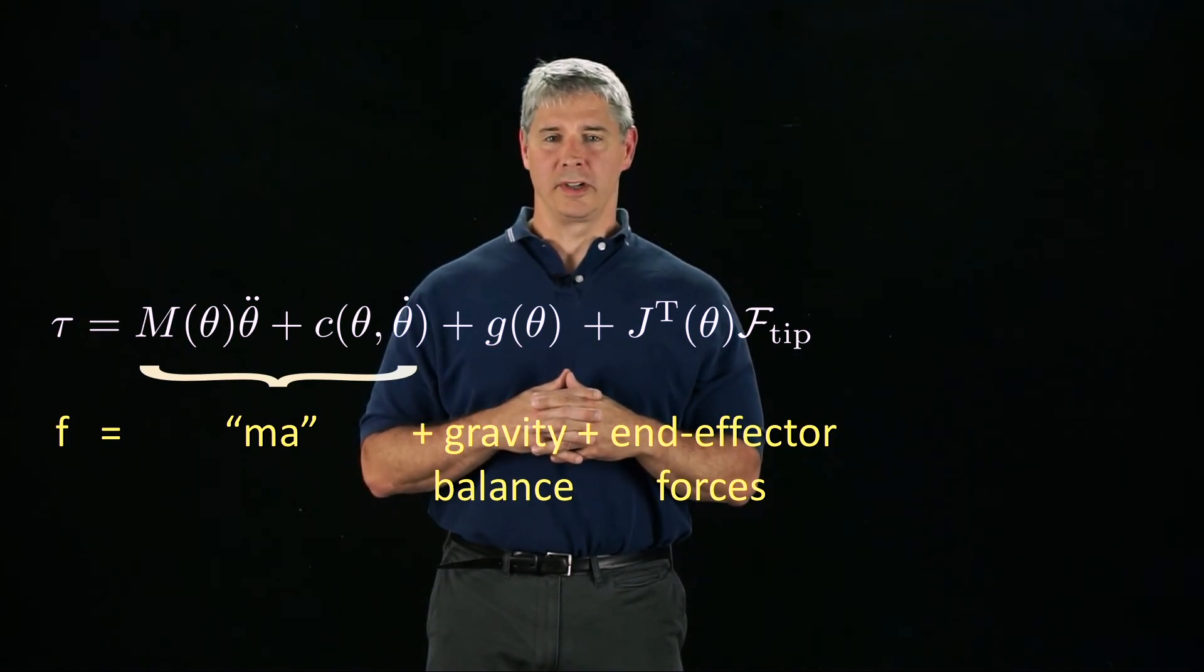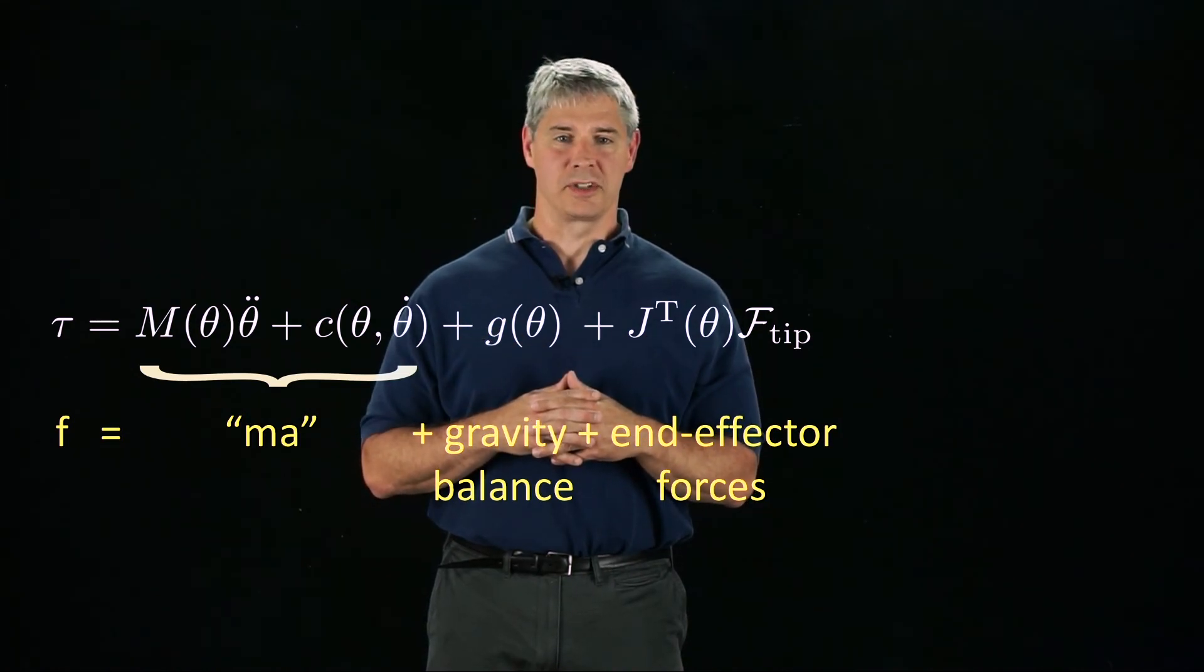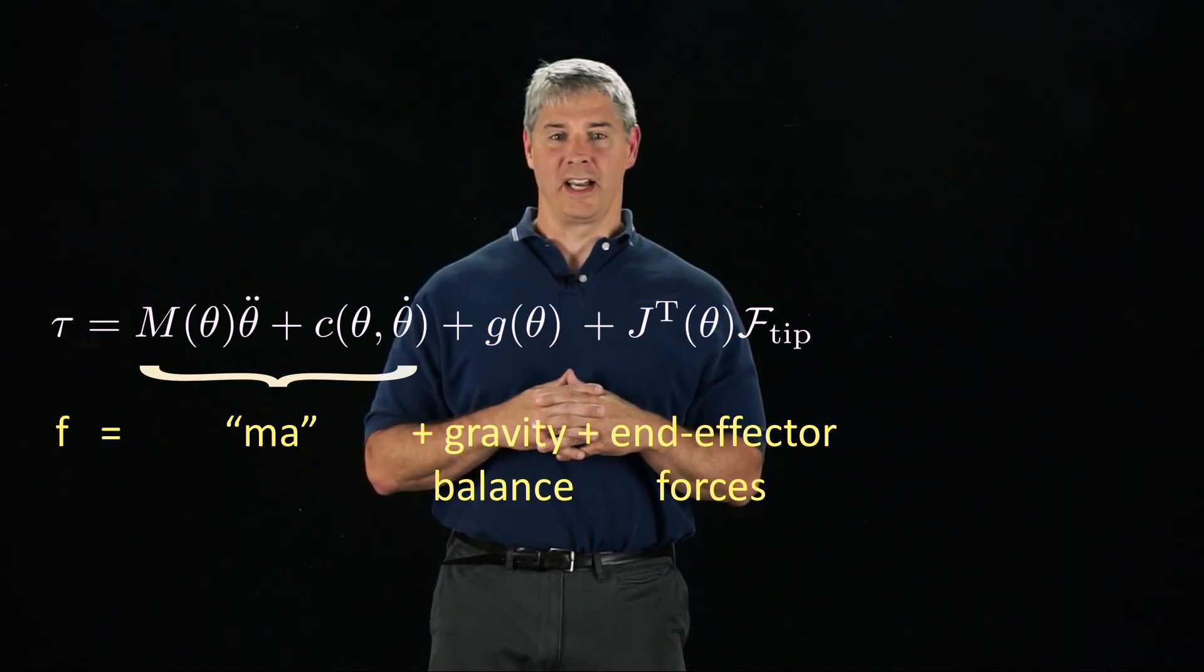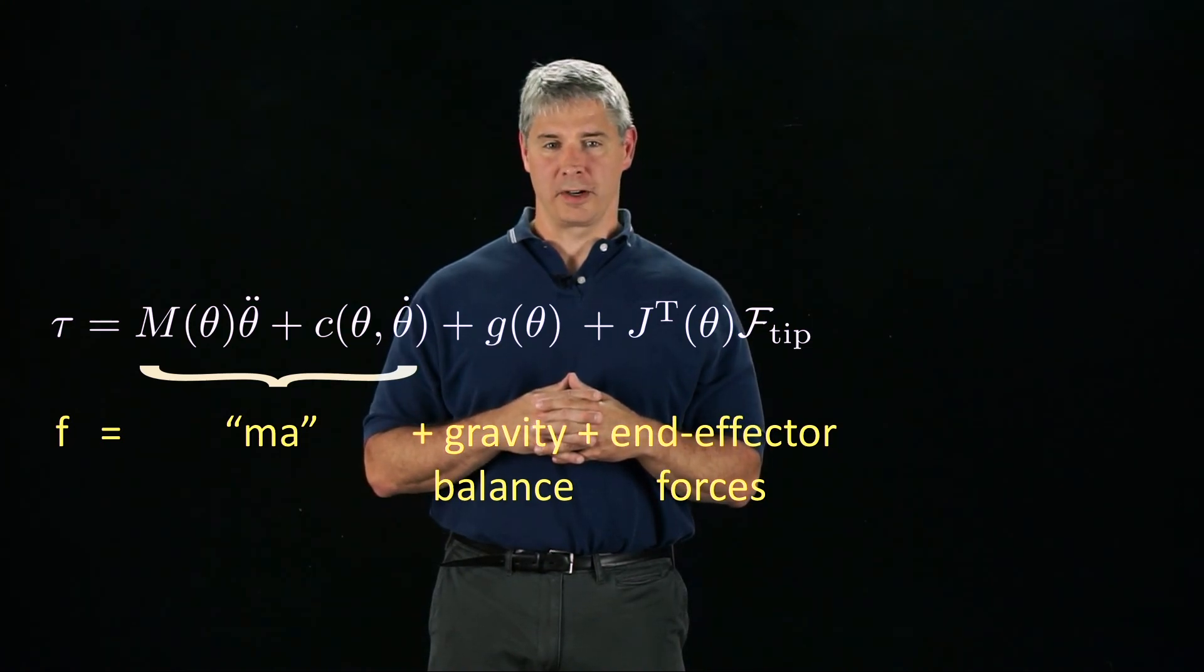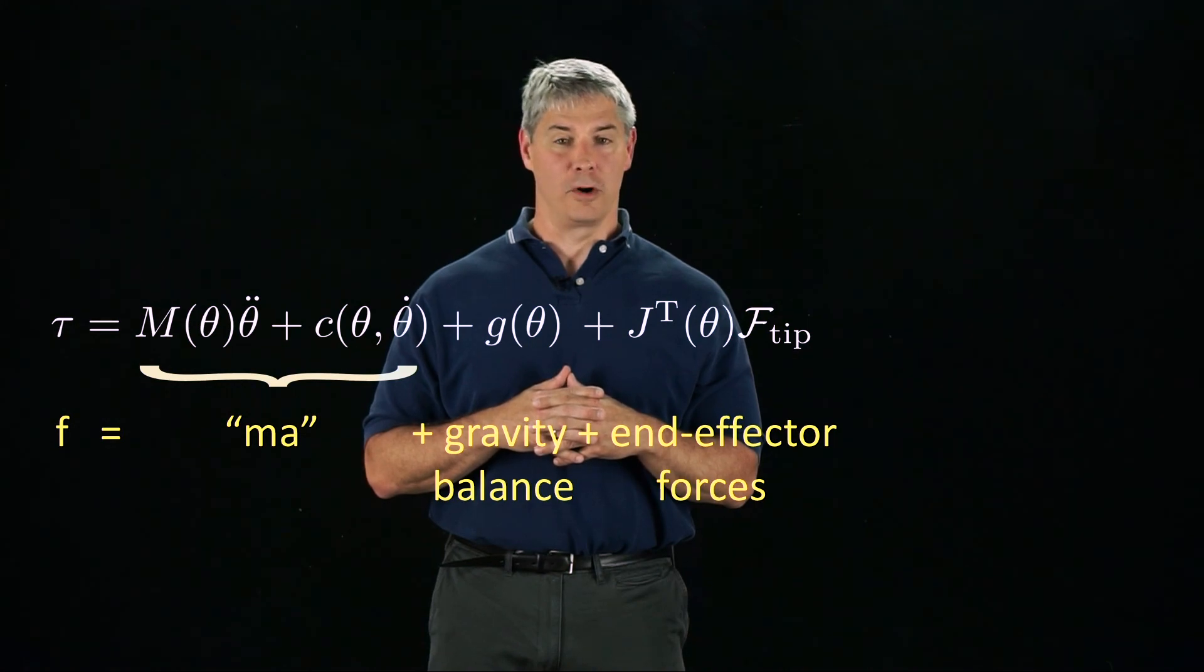Starting in the next video, we will learn another way to derive these same equations, beginning with the equation F equals MA for a single rigid body. This is called the Newton-Euler formulation of the dynamics. This formulation allows us to derive an efficient recursive algorithm, without differentiations, for computing the dynamics of open-chain robots.